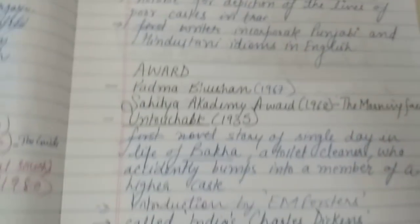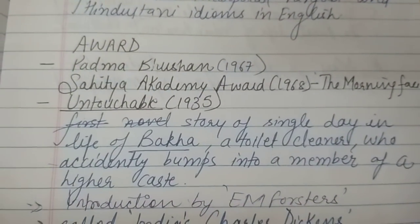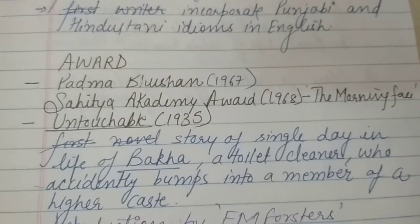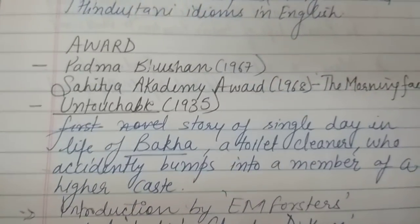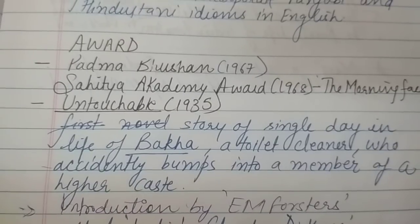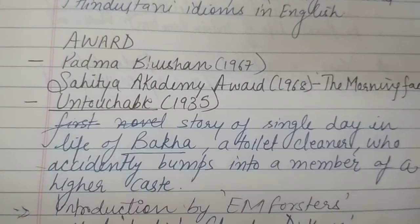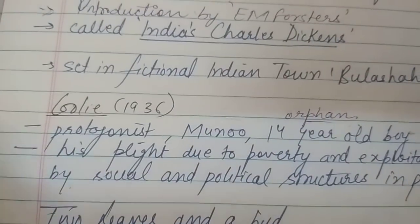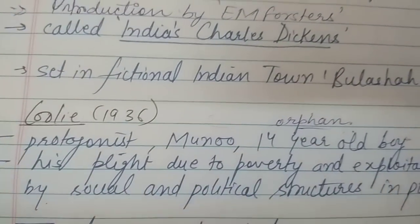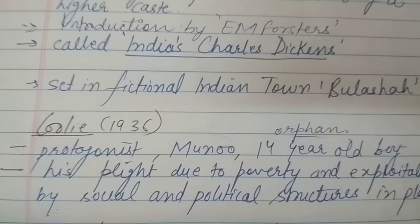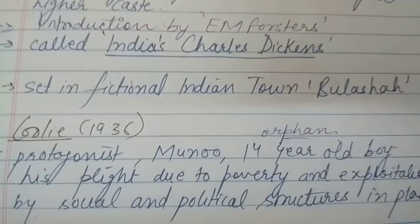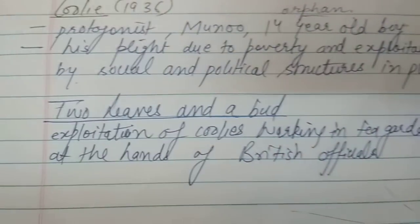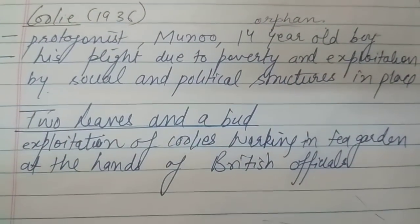Mulk Raj Anand's first important novel is Untouchable — his masterpiece. It is the story of a single day in the life of Bakha, a toilet cleaner who accidentally bumps into a member of a higher caste. The introduction to this novel was written by E.M. Forster. Untouchable was set in the fictional Indian town Bulashah. His second important novel, Coolie, has a main protagonist named Munoo, an orphan 14-year-old boy, and shows the plight of Munoo due to his poverty and exploitation. Two Leaves and a Bud is the story about the exploitation of coolies working in a tea garden at the hands of British officials.